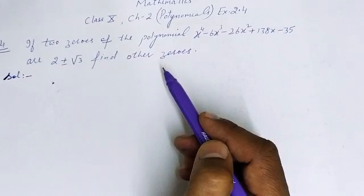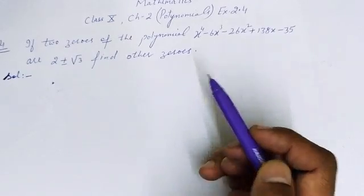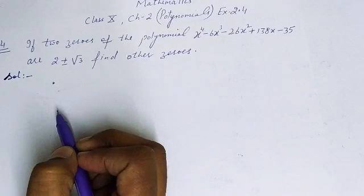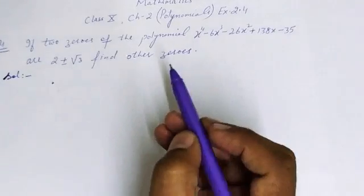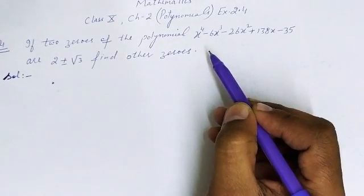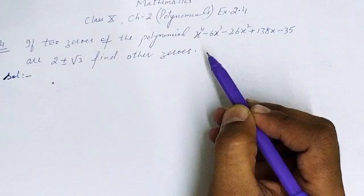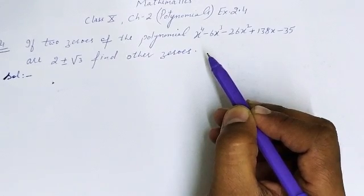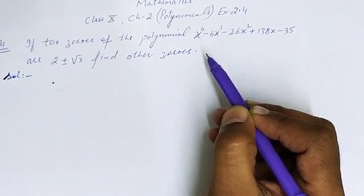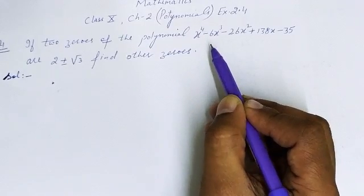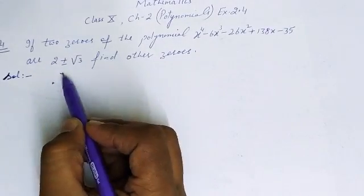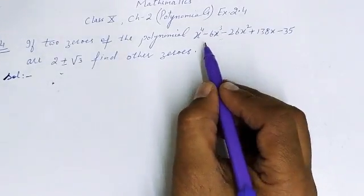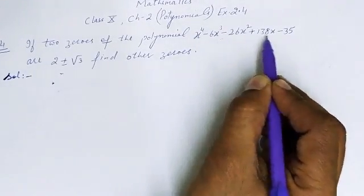We need to find the other two zeros. Before doing this, we should know the Factor Theorem. The Factor Theorem says that if 'a' is the zero of some polynomial, then (x - a) will be its factor. For example, if 3 is the zero then (x - 3) is its factor; if -2 is the zero then (x + 2) is its factor. We will apply this theorem here.